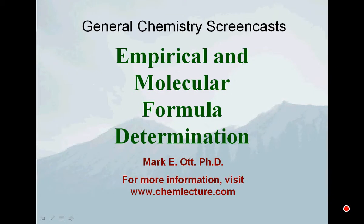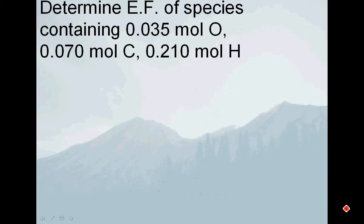In this screencast, we are going to figure out how to come up with empirical and molecular formulas from actual experimental data. First, we're going to start with a very simple example: determining the empirical formula of a species that contains 0.035 moles of oxygen, 0.07 moles of carbon, and 0.210 moles of hydrogen.